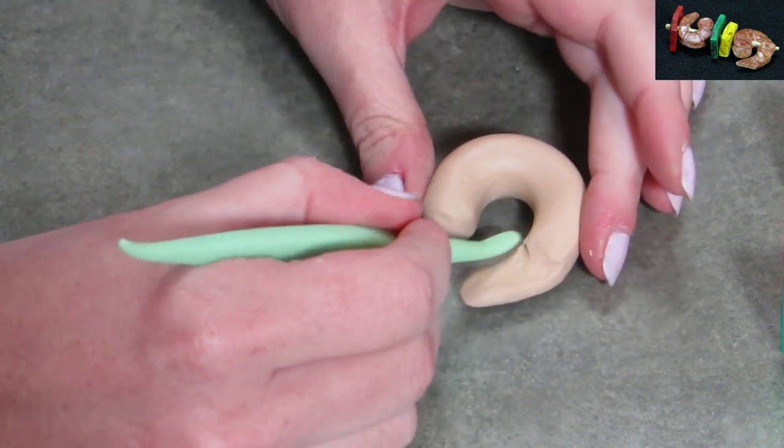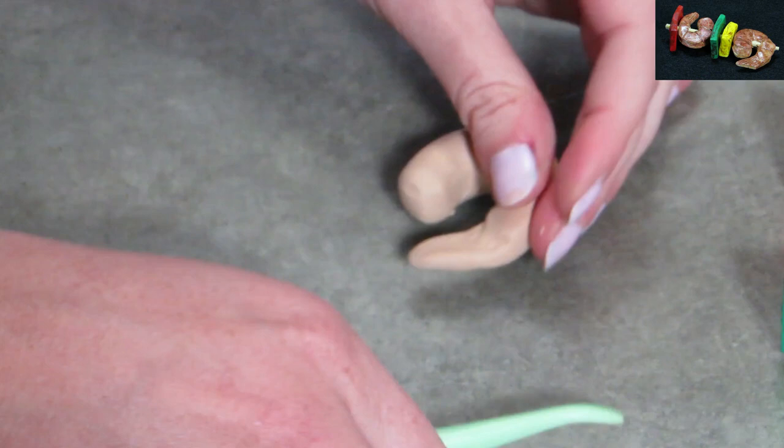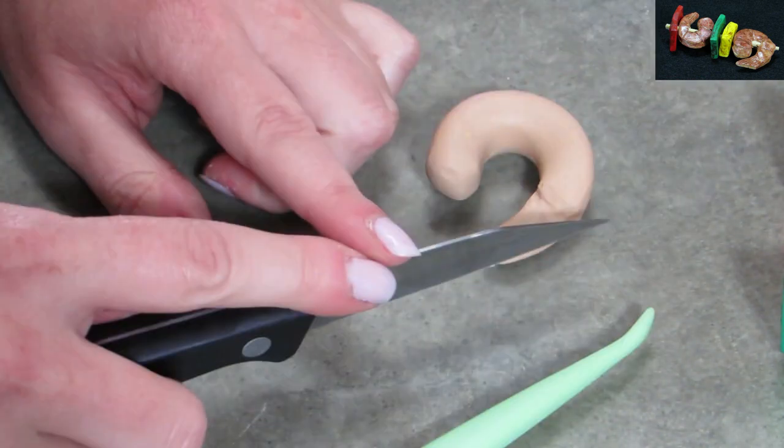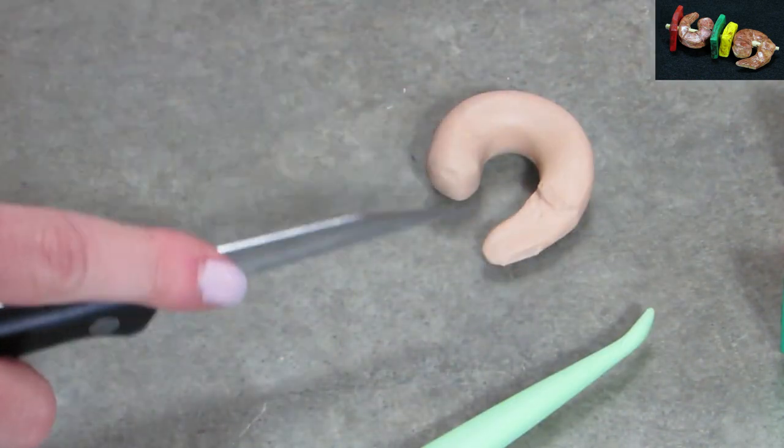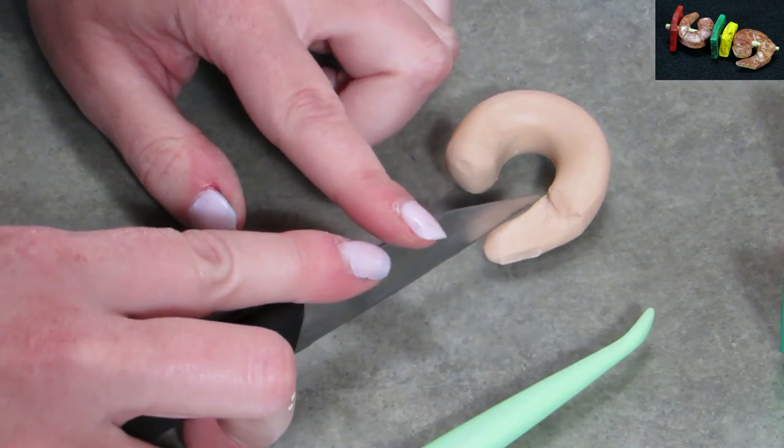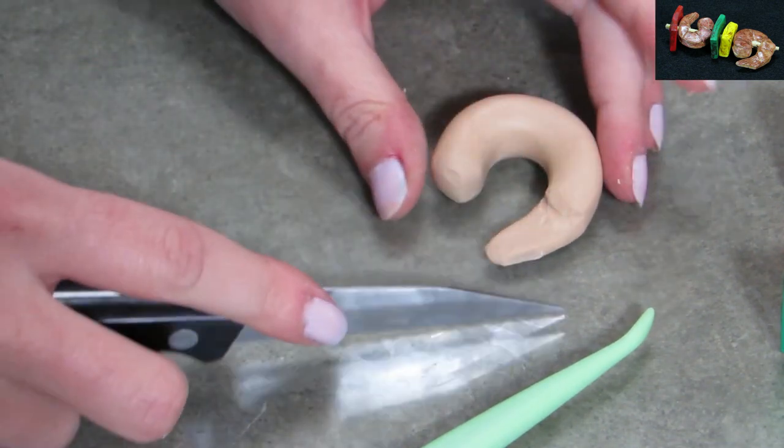As you can see from my shrimp, I took some beige, rolled it into a big old cat dookie shape, flattened off the one end, rounded it off a little bit there with that tool. Now, I'm kind of trimming it. That's going to become the tail of the shrimp, but you probably already guessed that anyway.